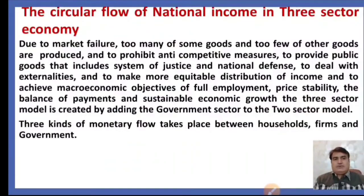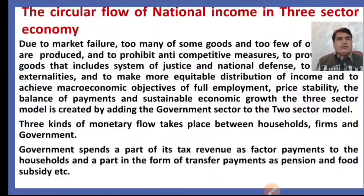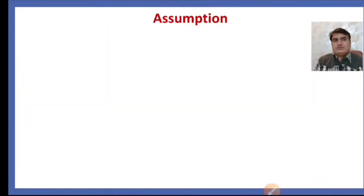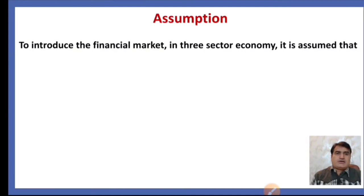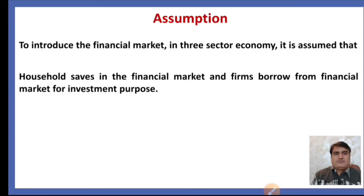Three kinds of monetary flow take place between households, firms, and government. The government spends a part of its tax revenue as factor payments to the households and a part in the form of transfer payments such as pensions and food subsidies. To introduce a financial market in the three-sector economy, it is assumed that households save in the financial market and firms borrow from the financial market for investment purposes.